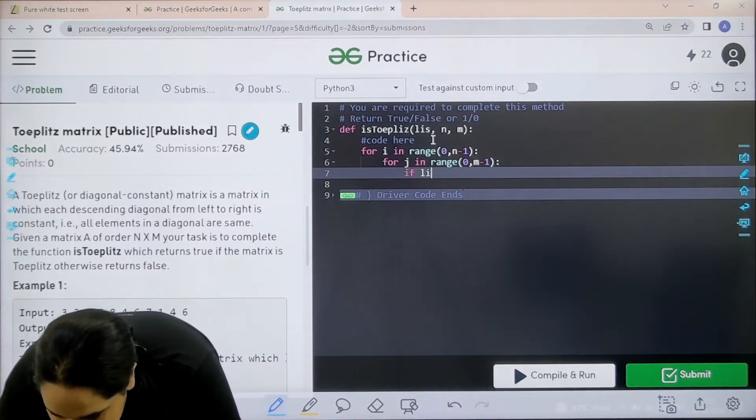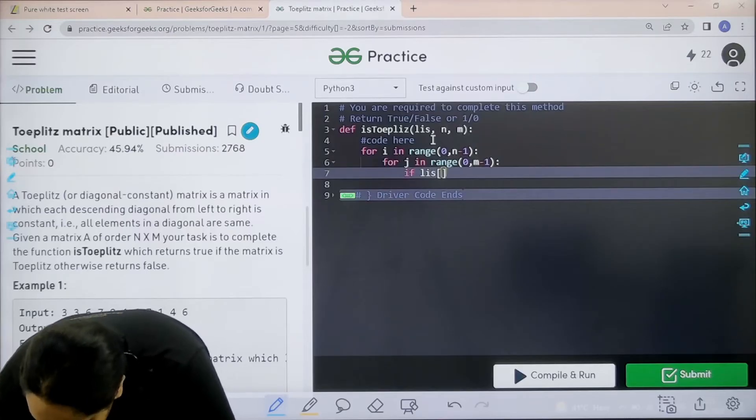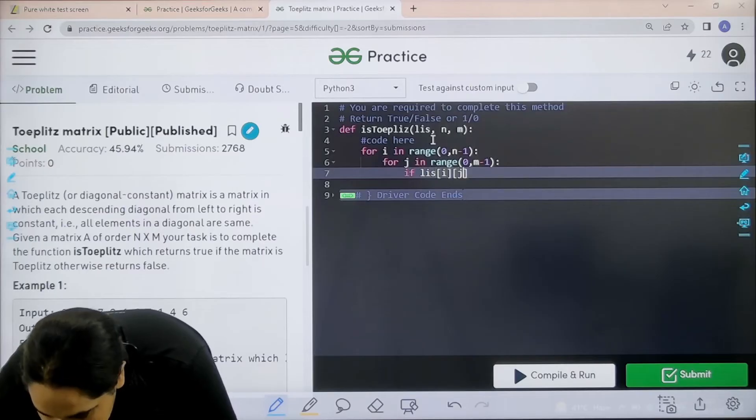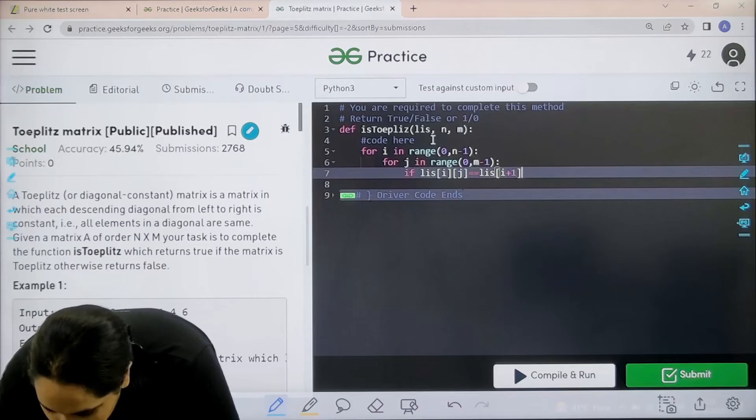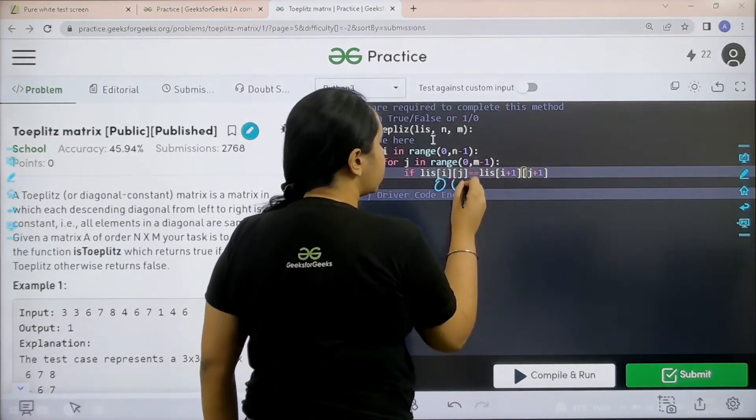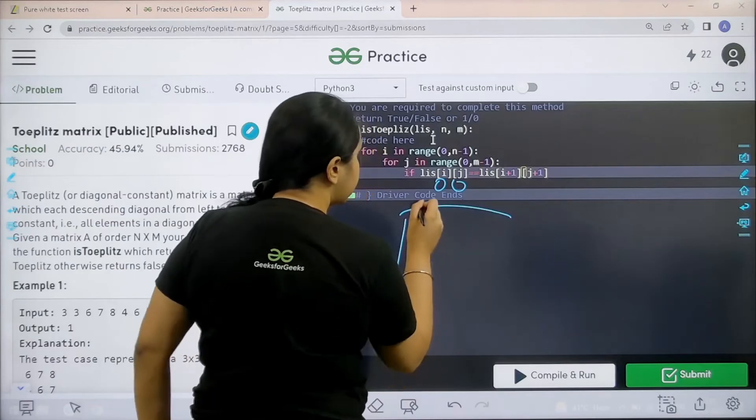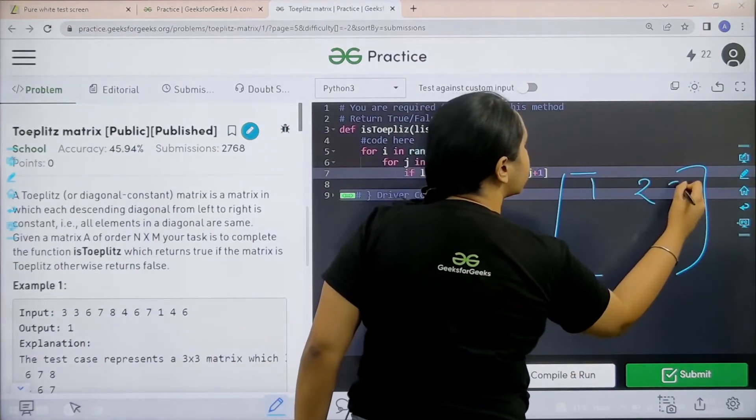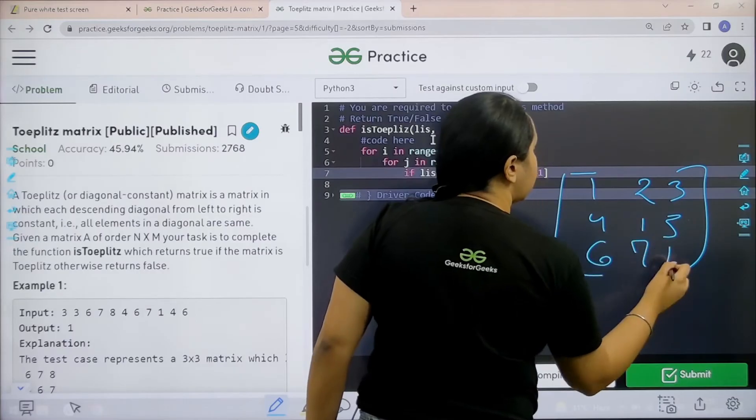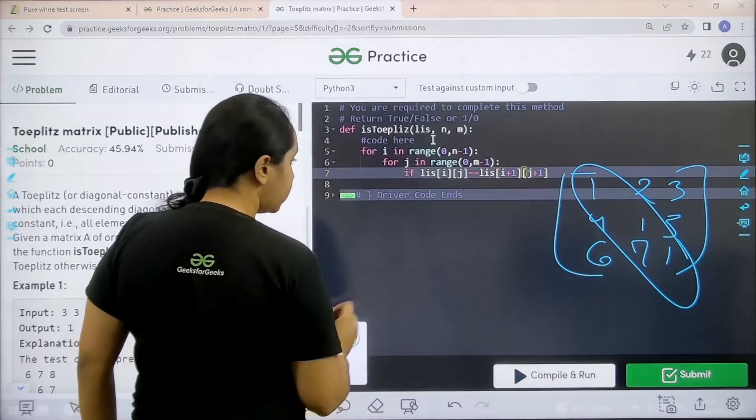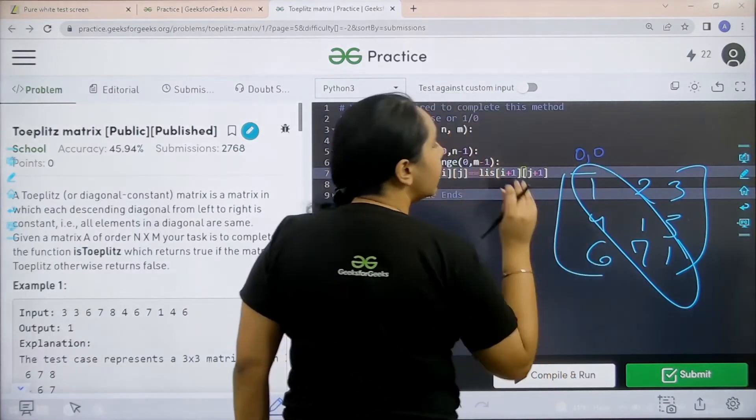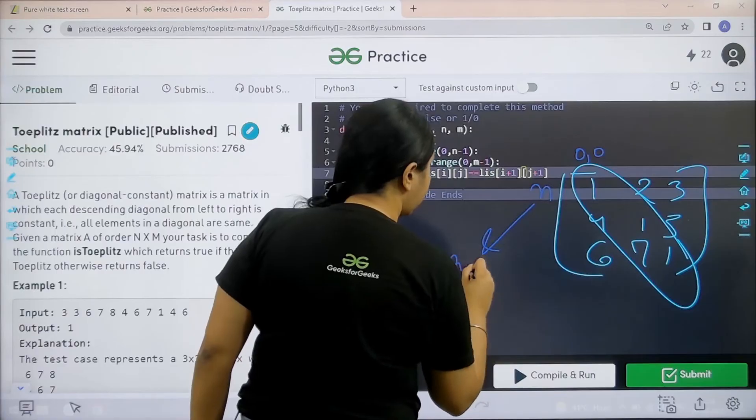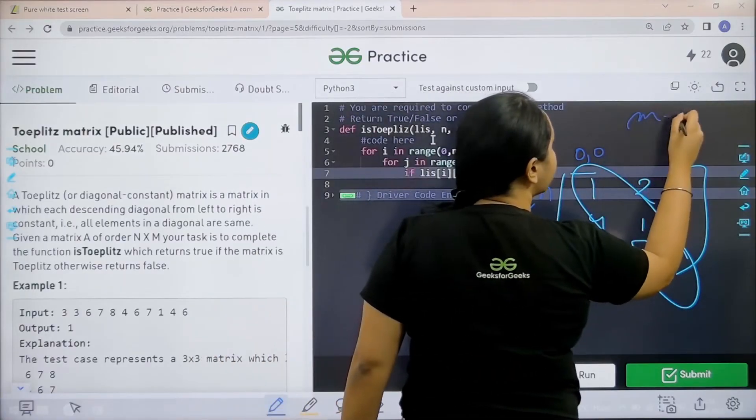So it is if list, that is list i and then j is equal to list then it is i plus 1, and over here it is j plus 1. Now basically this means if over here I am at the 0th row that means the first one. This is 0. So I have 1, 2, 3, 4, 1, 5. Now the position for the first element over here is 0, 0. Now if I see, n is for rows and m is for columns.